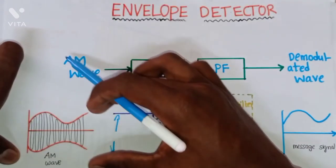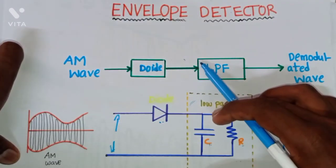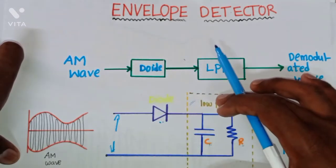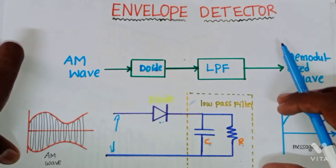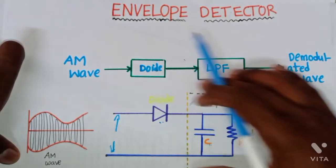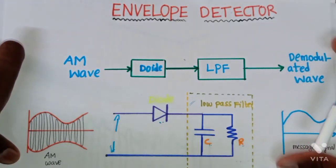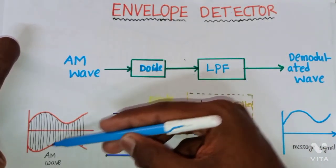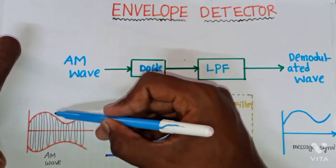When we apply the AM modulated wave to the envelope detector — this total section is the envelope detector — then we can get the message signal that was transmitted at the transmitter. Now let's look at the AM modulated wave: it has both sidebands — the upper sideband and the lower sideband.